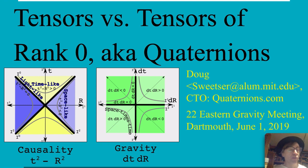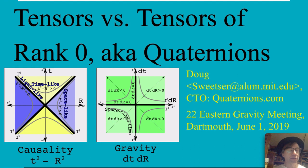We've got the familiar Minkowski spacetime diagram there, where the zeros are on the diagonal, because that's where dt squared minus dr squared equals zero. And we have the hyperbolas there that show the Lorentz symmetry of Minkowski spacetime. And then we have this green graph, which I don't think anybody is familiar with — it's just that one, the other one, rotated by 45 degrees.